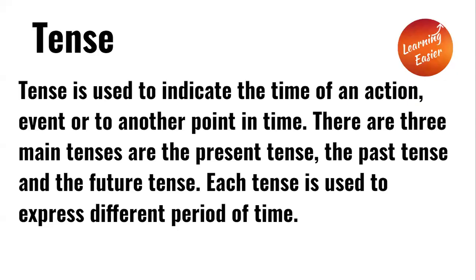Tense is used to indicate the time of an action, event, or relation to another point in time. There are three main tenses, and they are the present tense, the past tense, and the future tense. Each tense is used to express different periods of time.